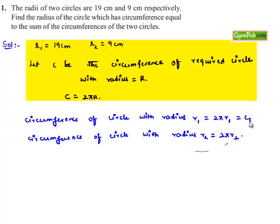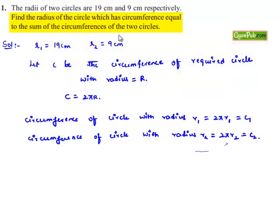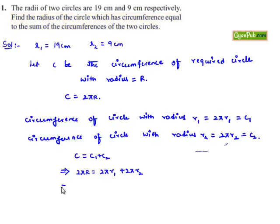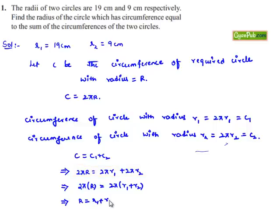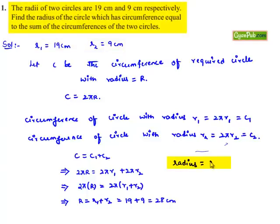Let the circumferences be C1 and C2. It is given that the circumference of the required circle equals the sum of the circumferences of the two circles, i.e., C = C1 + C2, which implies 2πR = 2πR1 + 2πR2. Taking 2π common, R = R1 + R2 = 19 + 9 = 28 cm. Therefore, the radius of the required circle is 28 cm.